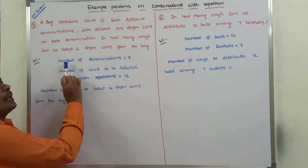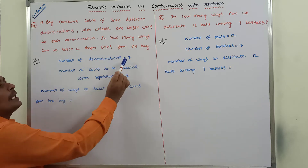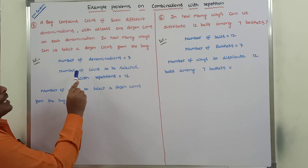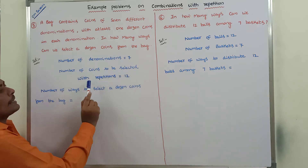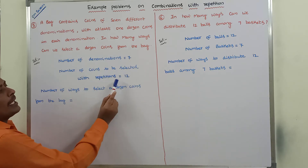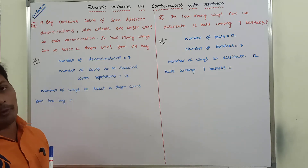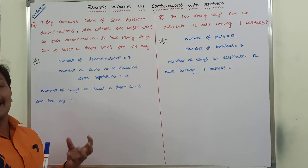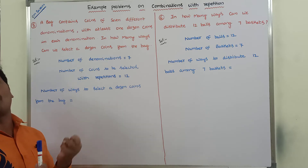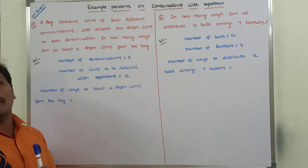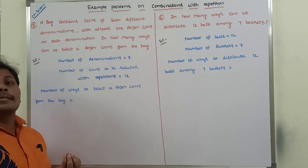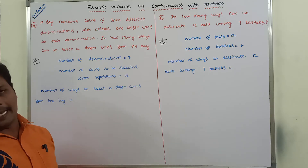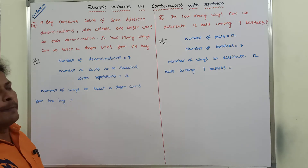So the data is: number of denominations is equal to 7, and number of coins to be selected with repetition is equal to 12. We may select 12 coins, and in those 12 coins, repetition is also allowed.